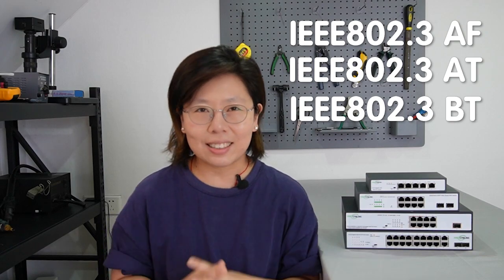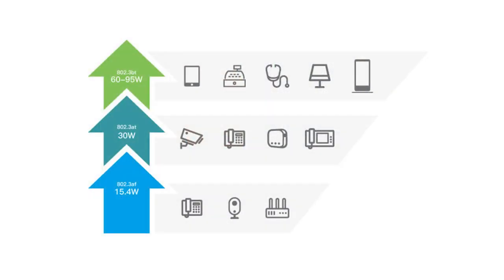Now that we know all the advantages of using a PoE switch, the question is: how do we choose the best one? Here are a few considerations before you pick the right one. First, the PoE standard. PoE technology operates under different standards that define power delivery capabilities. Two commonly used standards are IEEE 802.3af and 802.3at. The 802.3af standard, also known as the PoE standard, can provide approximately 15.4 watts of power output, usually used in low-power devices such as basic IP cameras.